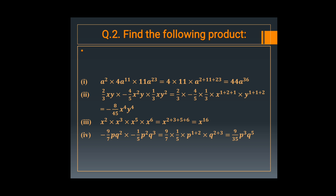Now in question number 4 of this set, similar to the previous: minus 9 upon 7 PQ square into minus 1 upon 5 P square Q cube. First, minus into minus gives plus. Then add the power of P: 1 and 2, and add the power of Q: 2 and 3. So it is 9 upon 35 P cube into Q raised to the power 5.